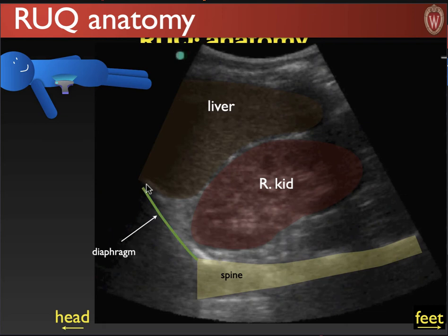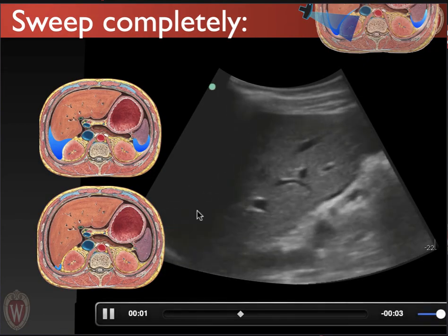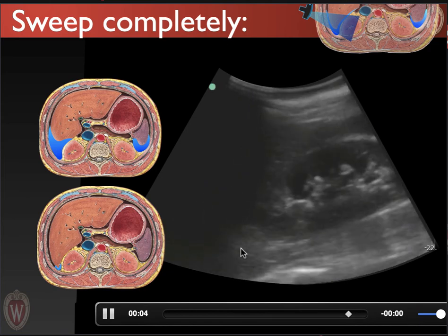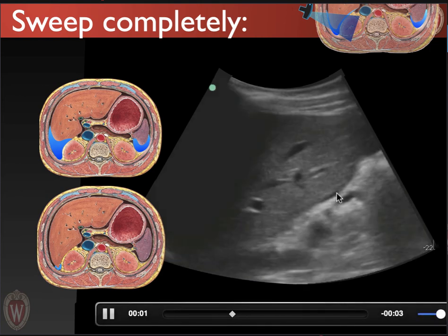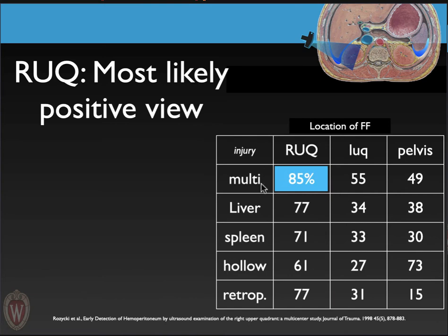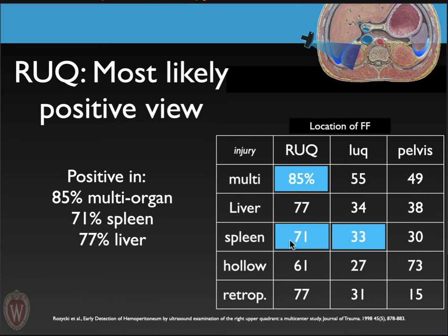This gives us a chance to review right upper quadrant anatomy. We're looking at the liver, and the places where fluid collects are peridiaphragmatic, along the hepatorenal area, and at the tip of the liver. Make sure you sweep completely through this area — it is your highest yield area, but if you don't sweep completely you may miss tiny fluid collections like a little stripe here. It is the most likely positive view even in patients who don't have a right upper quadrant injury: 71% of patients with a spleen injury had fluid in the right upper quadrant, but only 33% had it in the left upper quadrant. The location where you find fluid on a FAST exam does not indicate with any statistical reliability where the injury is.